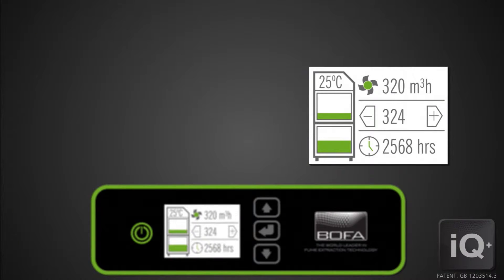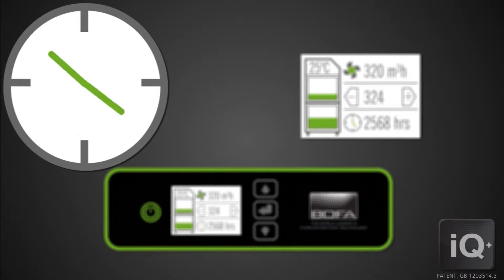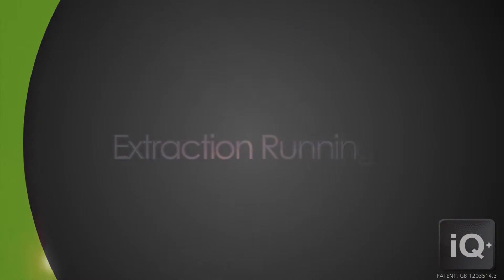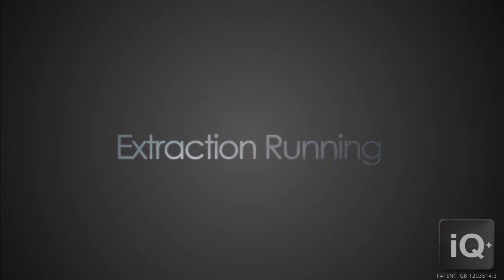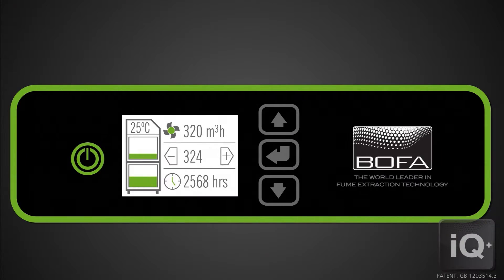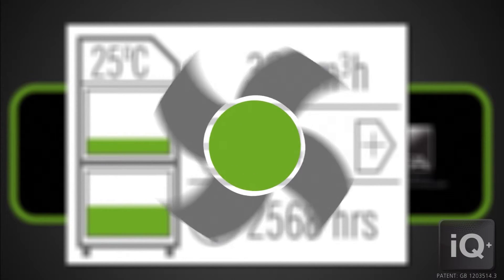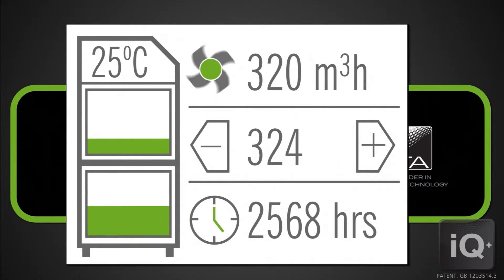A visual counter displays the actual run hours of the motor, ensuring meaningful data analysis can be undertaken. The fan will rotate when the motor is running, indicating that the unit is operating correctly.